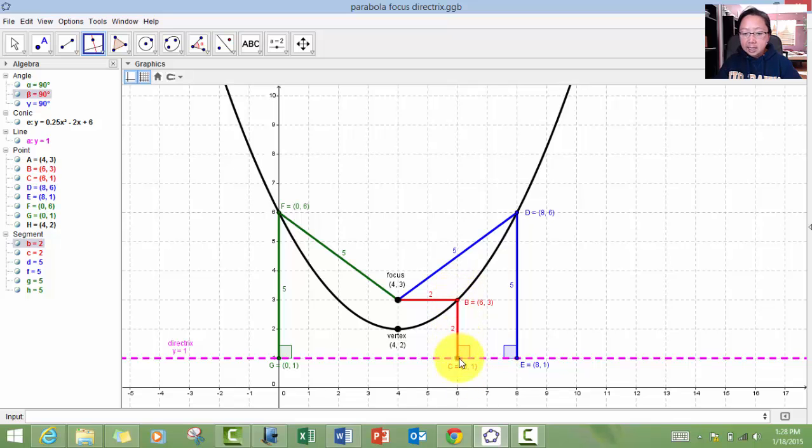And that distance between that point B and the directrix will be exactly the same distance between that B and the focus. Note that it's in red here. It's two units. And the line segment that's red straight down to perpendicular is also two units. That's the definition of a parabola.